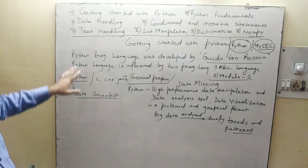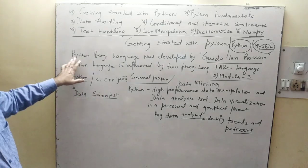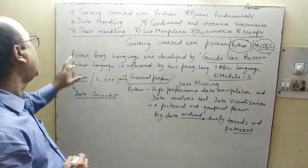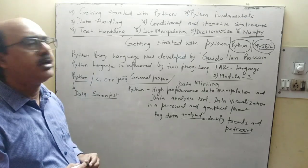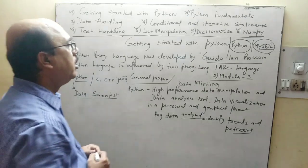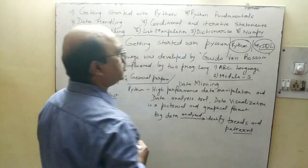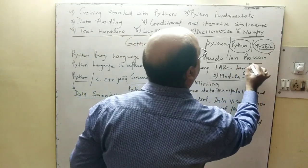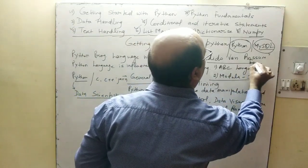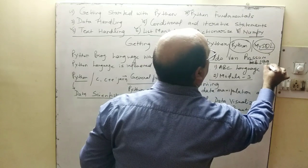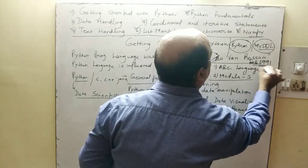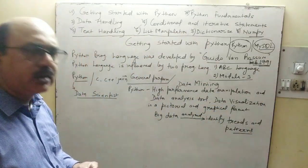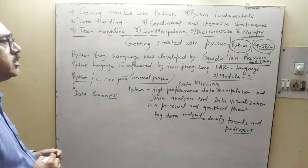First, we will learn who developed Python. I have written here: Python programming language was developed by Guido Van Rossum in February 1991. Guido Van Rossum is a scientist and data scientist.